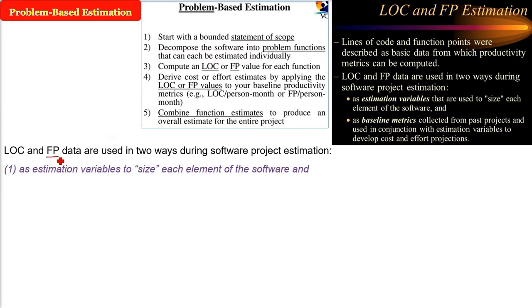LOC and FP data are used in two ways during software project estimation. Line of code and function points. First is as estimation variables to size each element of the software.